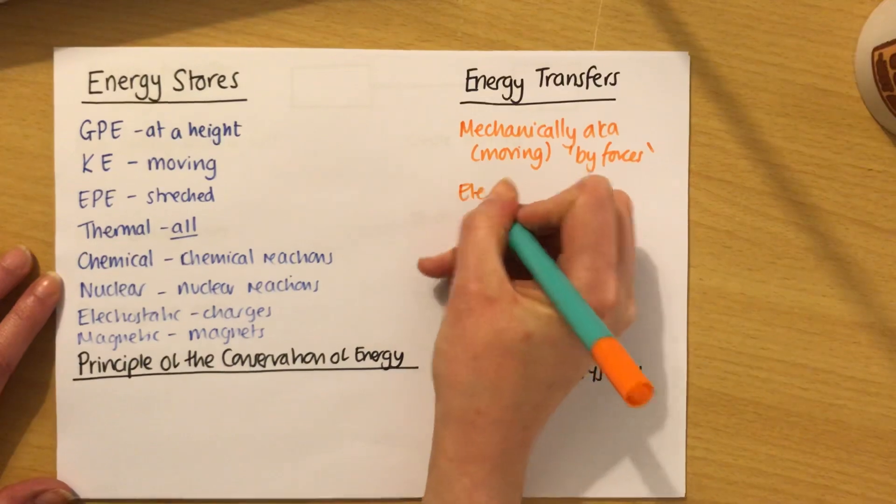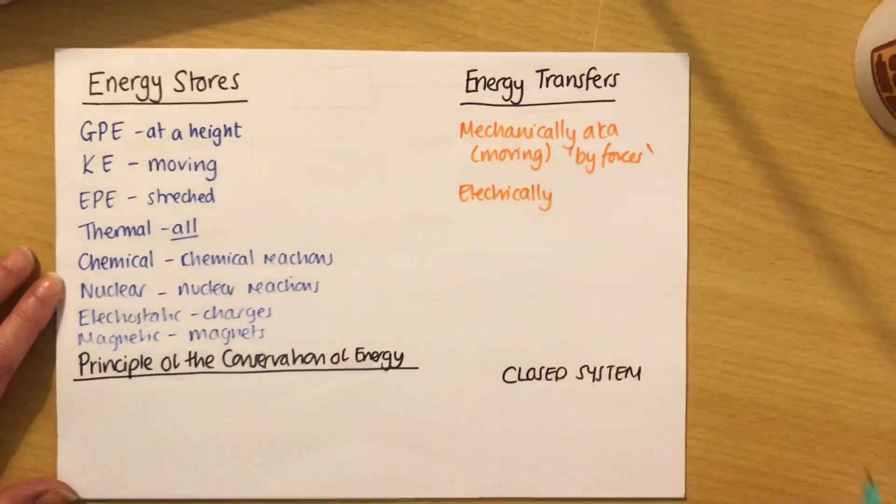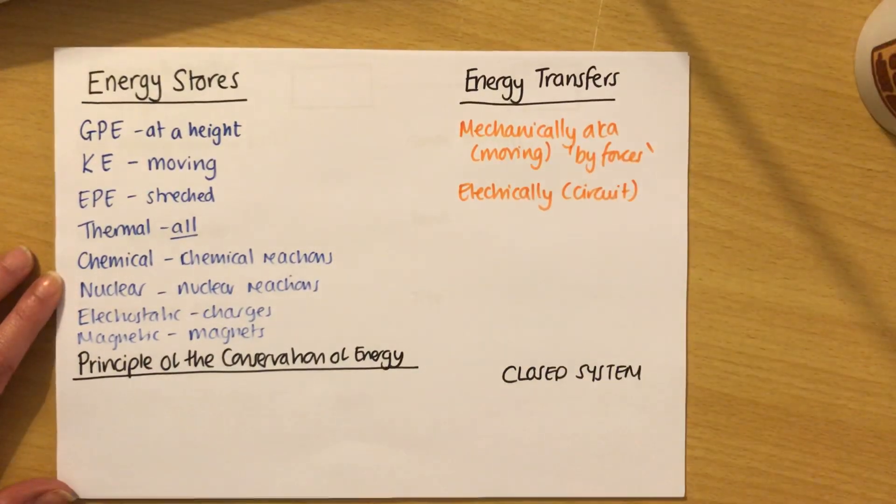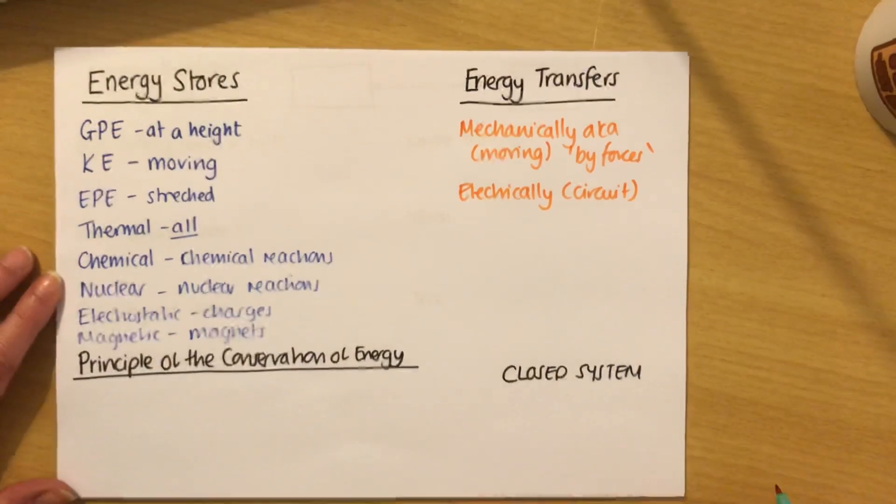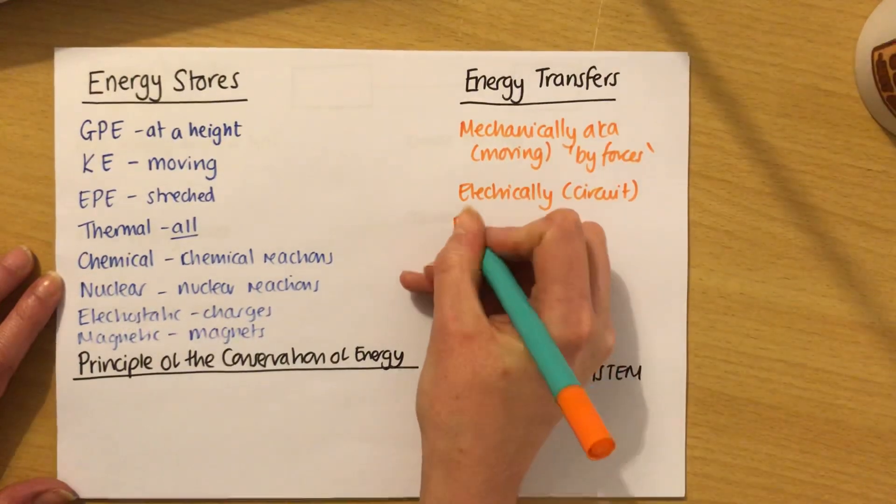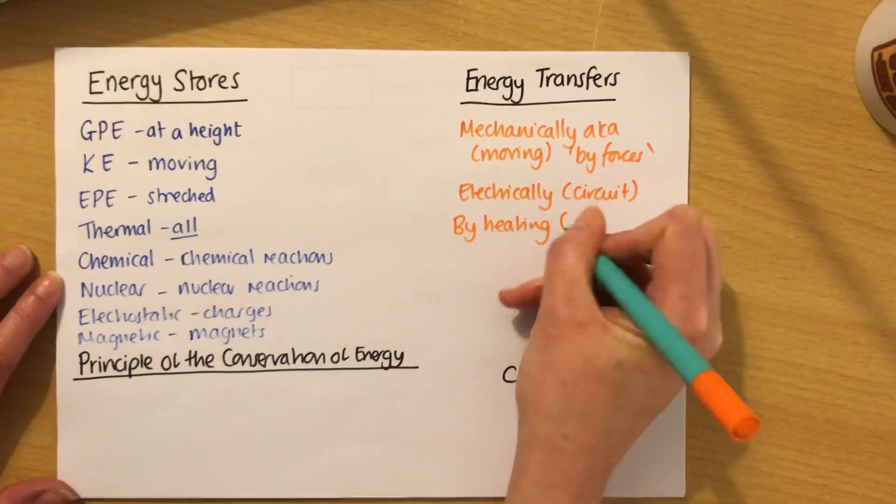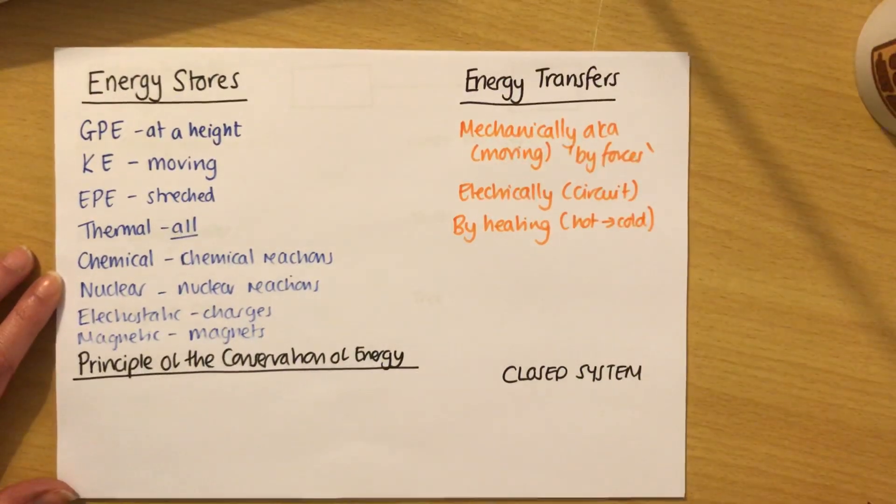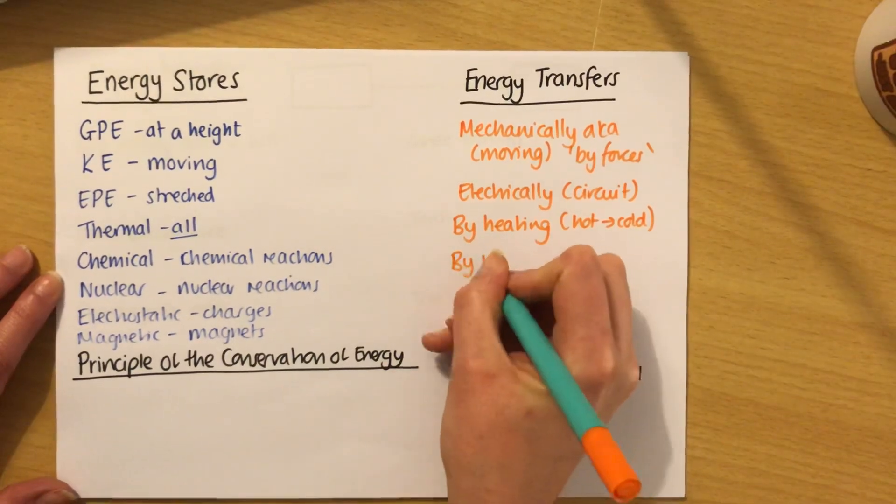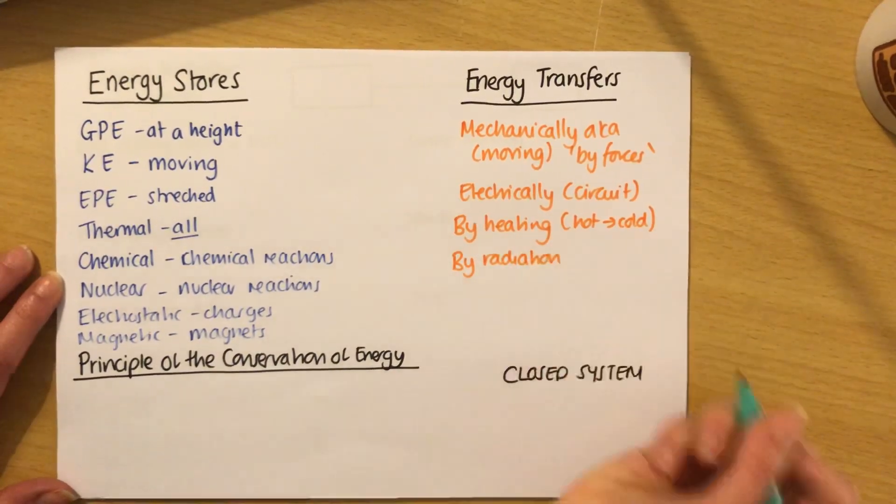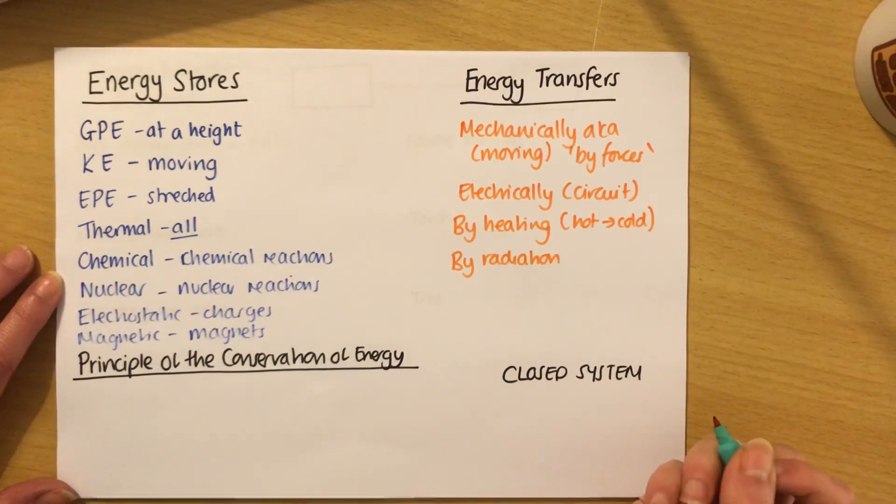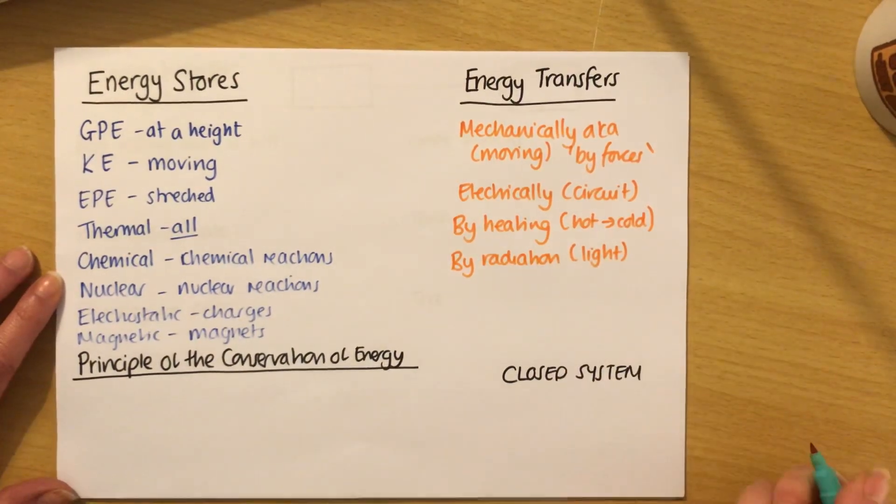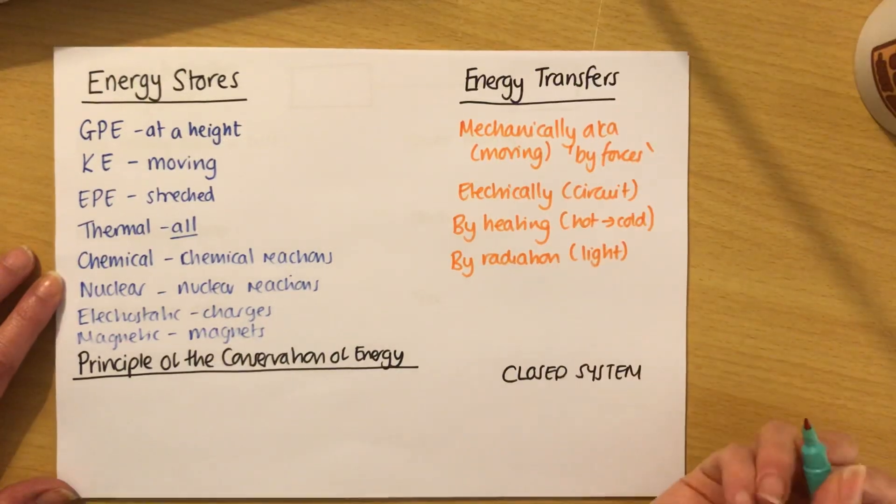Secondly, there's electrically. That is if it is connected to a circuit and electrons are carrying the energy or transferring the energy from one store to another. Then we have by heating. That's when energy goes from a hot to a cold place. And finally, there's by radiation. When we say radiation here, we specifically mean EM or electromagnetic radiation. The most common example of this one is light. So usually if light is transferring the energy, then we mean by radiation, or always, to be fair.